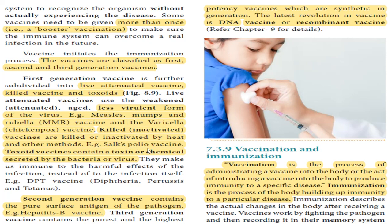An example of a killed vaccine is the polio vaccine. Diphtheria vaccines such as DPT are toxoid vaccines. Toxoid vaccines use the toxins — chemical secretions produced by bacteria or viruses — which are called toxoids.